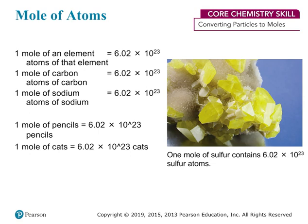If we apply this to atoms or elements or molecules, we can say that if you have one mole of an element, you have 6.02 times 10 to the 23rd atoms of that element. For example, one mole of carbon contains 6.02 times 10 to the 23rd atoms of carbon, and one mole of sodium contains 6.02 times 10 to the 23rd atoms of sodium. As a fun example, one mole of pencils would be 6.02 times 10 to the 23rd pencils — maybe in a warehouse somewhere — and one mole of cats means 6.02 times 10 to the 23rd cats.